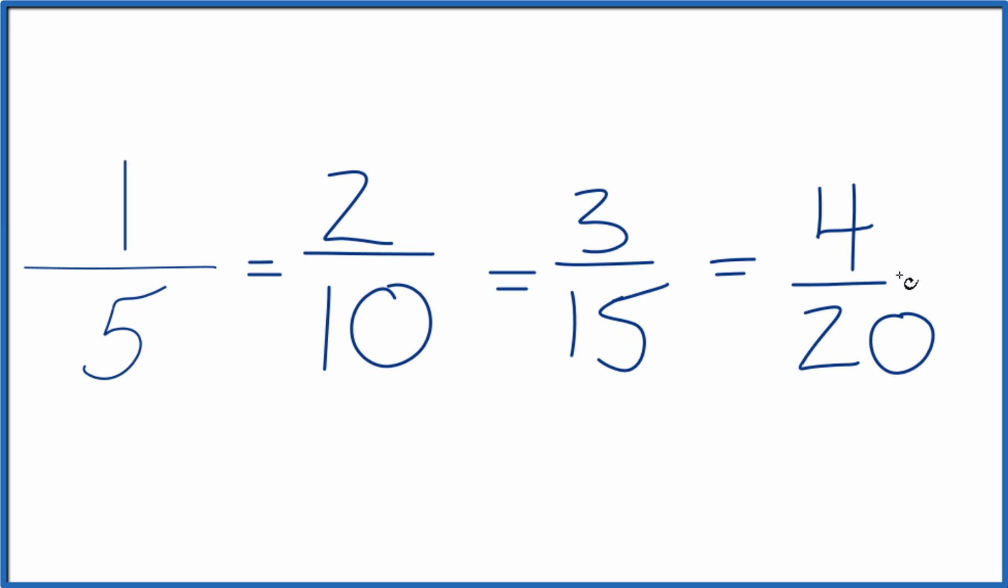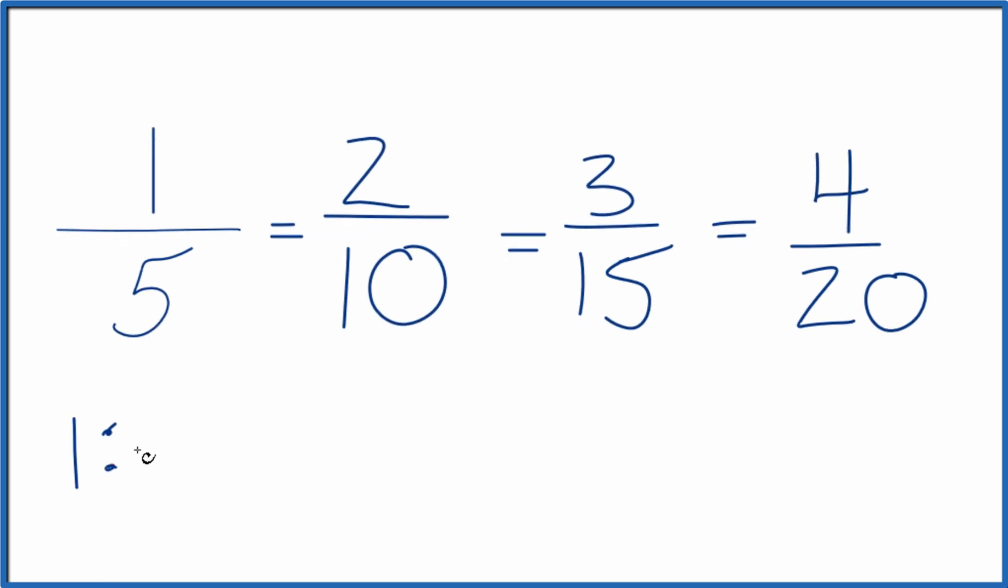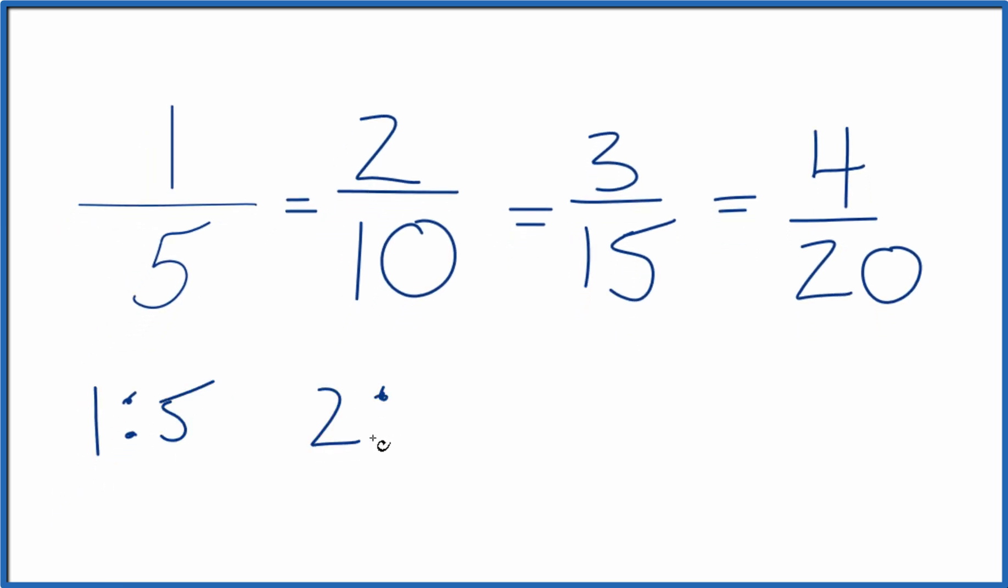And these are all equivalent fractions or equivalent ratios. And you could write them as ratios like this. We have 1 to 5 and 2 to 10 and so on. So that's it. That's how you write equivalent ratios for 1 fifth.